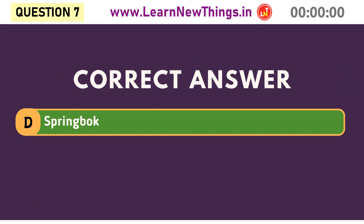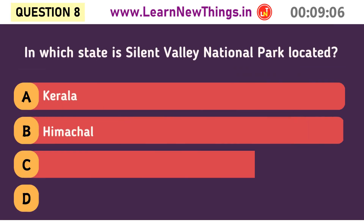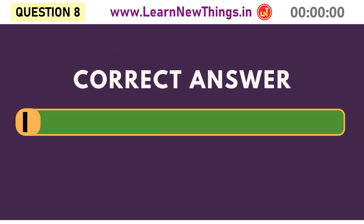Which is the national animal of South Africa? Springbok. In which state is Silent Valley National Park located? Kerala.